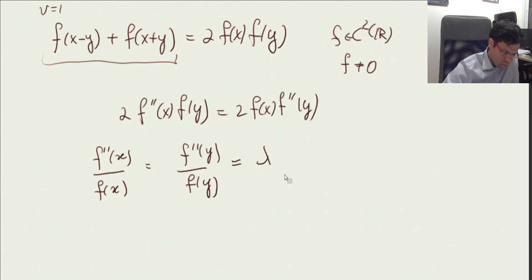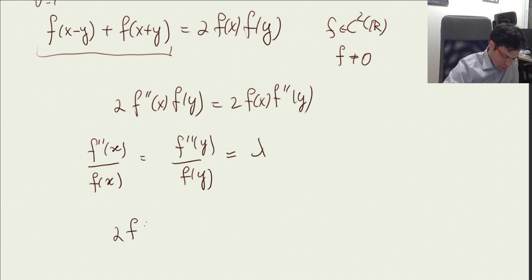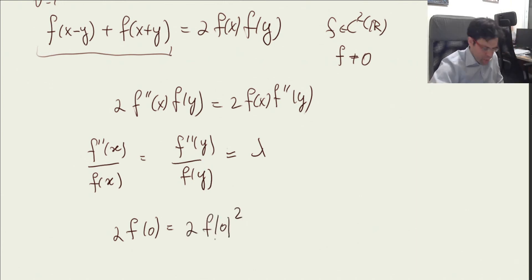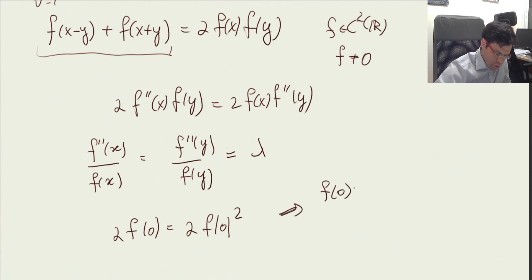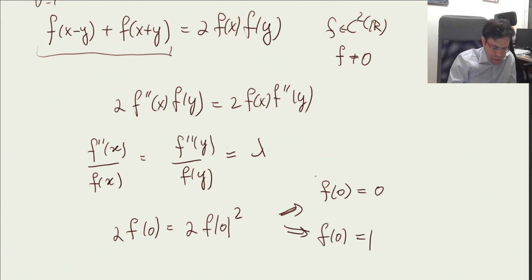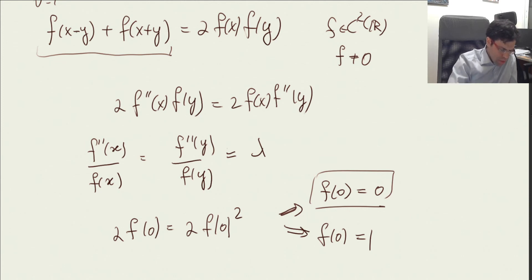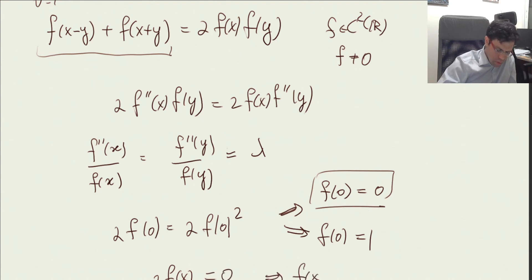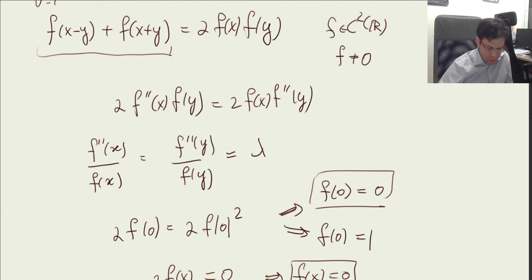Let us plug in some values. If we plug in zero for both x and y, then we have 2f(0) = 2f(0)². This means we have only two options: f(0) is zero, or f(0) is one. If we plug in zero for y and assume f(0) is zero, then the left side is 2f(x) and the right side is zero, which means f(x) is zero — that's only the trivial identically-zero solution. So the only interesting option is f(0) = 1.